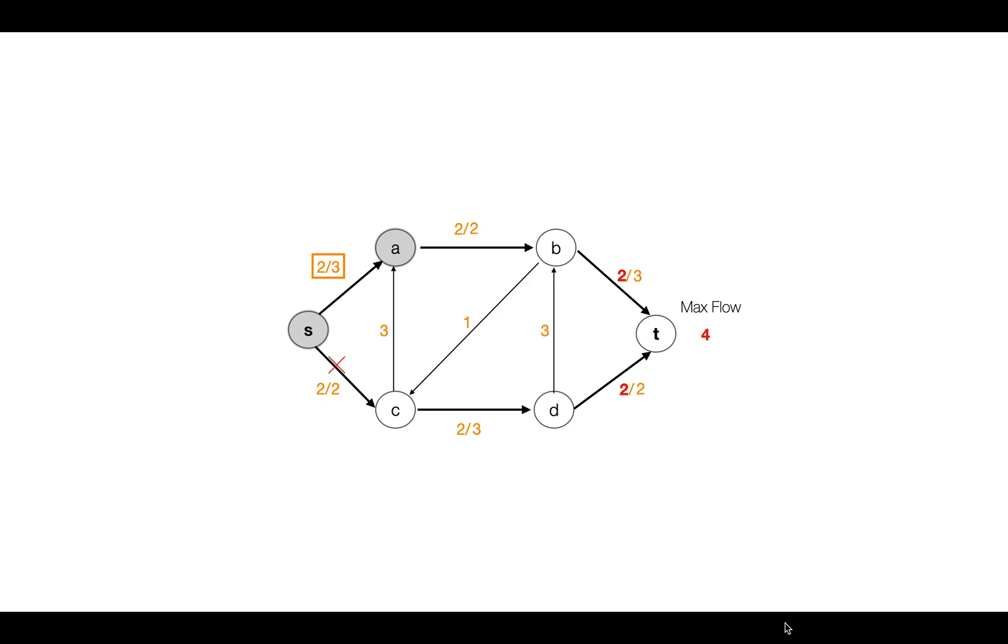If we try to go forward towards B from A, again it's not possible because this edge is completely filled. So this is the cut—this is the minimum cut for this flow network.